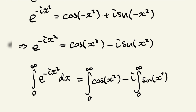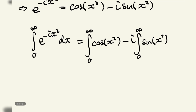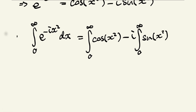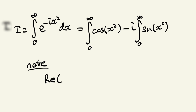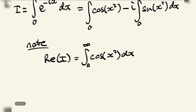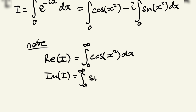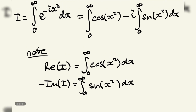We just need to solve this integral. We're going to call it I, so I is equal to the integral from zero to infinity of e to the negative i x squared dx. From this we can note that the real part of I is the integral from zero to infinity of cosine of x squared dx, and the negative imaginary part of I is equal to the integral from zero to infinity of sine of x squared dx.